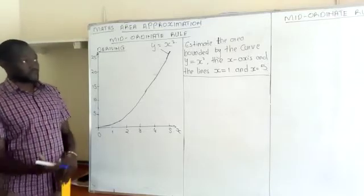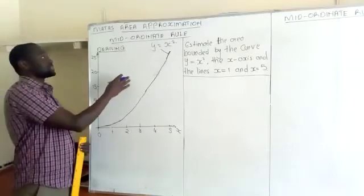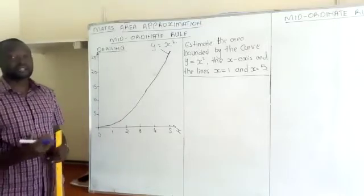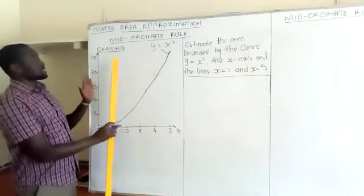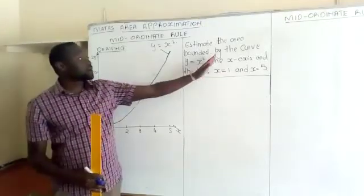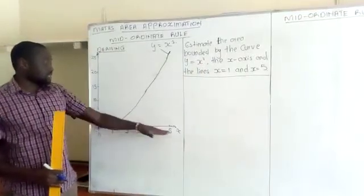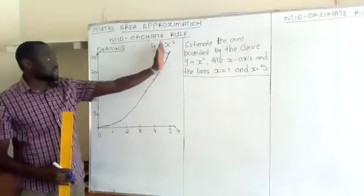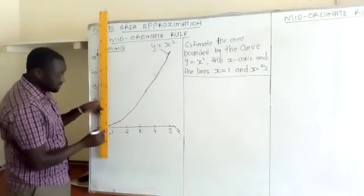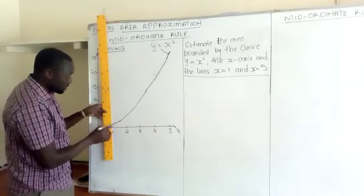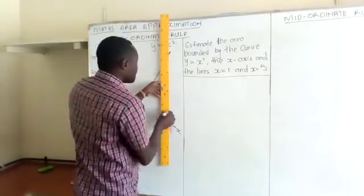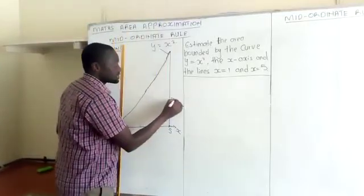We'll go straight to deriving the rule itself and see what happens. For example, I have a graph of y equals x squared and we want to estimate the area bounded by the curve, the x-axis, the line x equals 1, and the line x equals 5. This is the graph, this is the x-axis, those are the two boundaries, then we have the line x equals 1 and the line x equals 5.